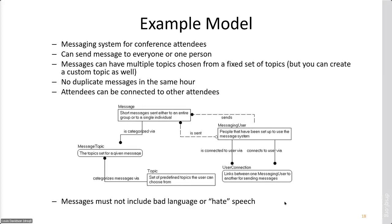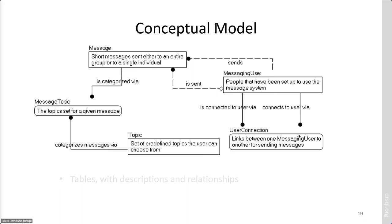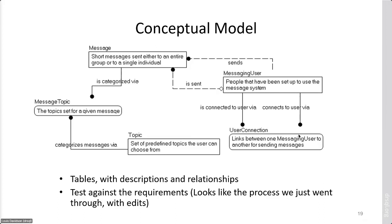The 'must not include bad language or hate speech' requirement is something we may need to build external to the database. So we have our conceptual model — tables with relationships. Once we've reviewed with the customer and they're happy with it, we sit down and do the logical model. We want all the columns with their legal values and domains.